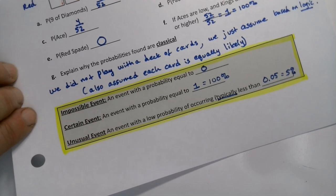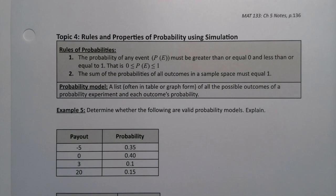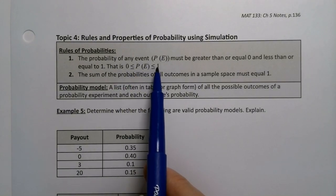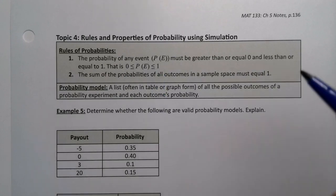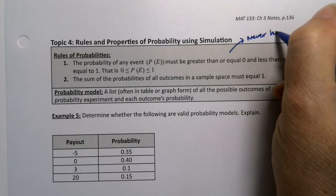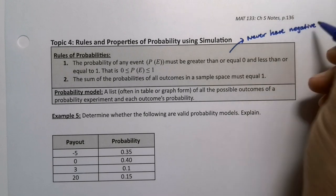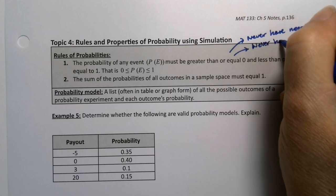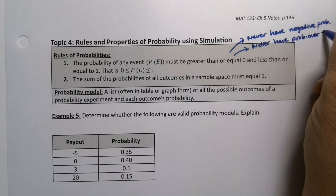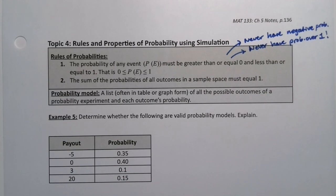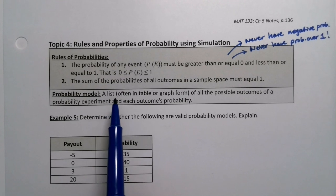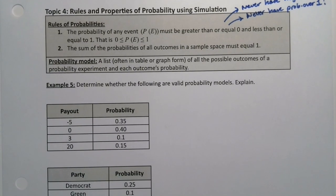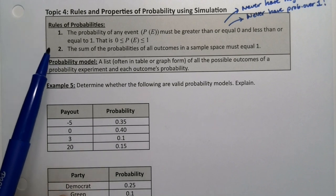As we do this, there are some rules coming out for probability. Namely, the probability of an event has to be between 0 and 1 — you can never be negative and you can never be more than 1. Also, the sum of the probabilities must be equal to 1. A probability model is a list, usually in table or graph form, of all the possible outcomes of a probability experiment and each outcome's probability. We're going to determine whether the following are valid probability models — in other words, do they satisfy these two requirements?